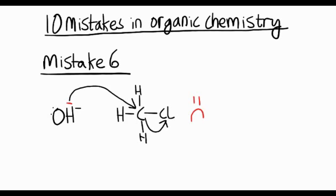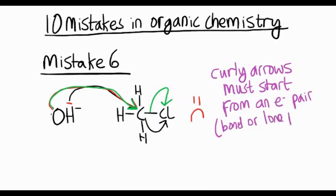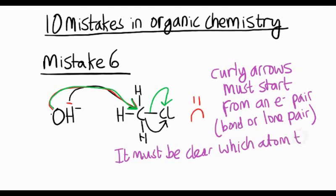Can you see the problem? Our curly arrow is starting from the hydrogen, not from that lone pair. You've got to start your curly arrows from an electron pair. And that second one's breaking the carbon-chlorine bond. So it either starts from a lone pair of electrons, for example on the oxygen of the hydroxide ion, or halfway through a bond, for example the C-Cl bond. It's also got to be clear where your curly arrows are going. Which atom are they attacking?